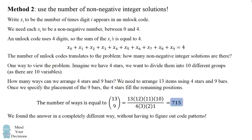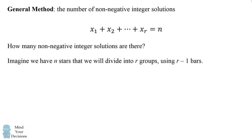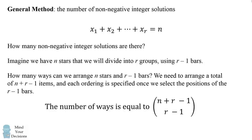The number of ways to arrange 13 items with 9 bars is 13 choose 9, which equals exactly 715 — the same answer, arrived at in a single calculation. More generally, if we have r variables summing to n, we represent this with n stars divided into r groups using r minus 1 bars. The number of non-negative integer solutions is n plus r minus 1 choose r minus 1.